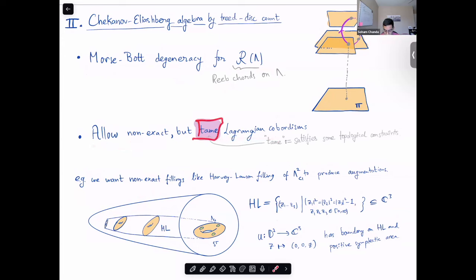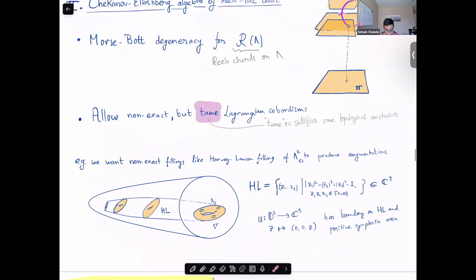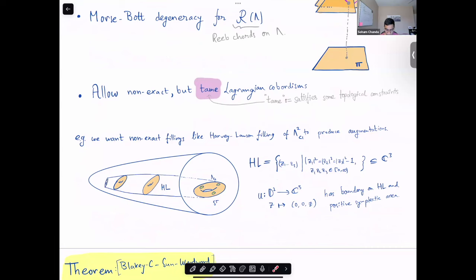And the next feature is that our setup allows non-exact Lagrangian cobordisms to induce DGA maps. We impose a condition which we term as TEAM. Here, TEAM means that it satisfies some topological constraints. So this should be thought of as extending to get more Lagrangian cobordisms. The main motivating example we had was to construct more augmentations. So in particular, the Harvey-Lawson filling of the Clifford torus is not exact. It's a solid torus such that at the end of the solid torus, you have this disk which has positive symplectic area. So not exact, obviously. And our setup allows the Harvey-Lawson filling to give you an augmentation of the Chekanovic algebra for the Clifford torus.